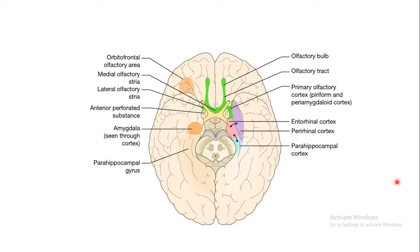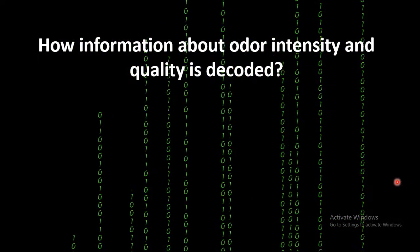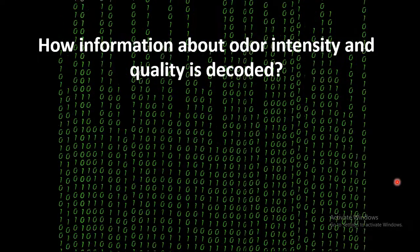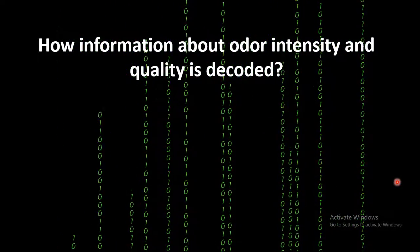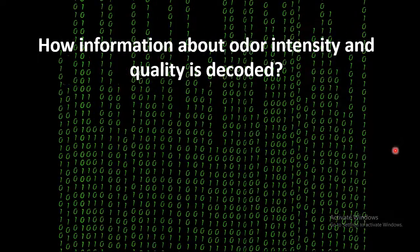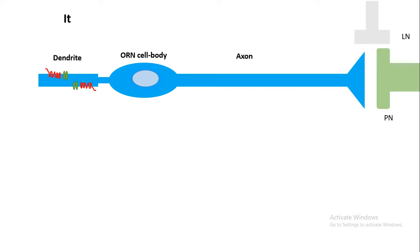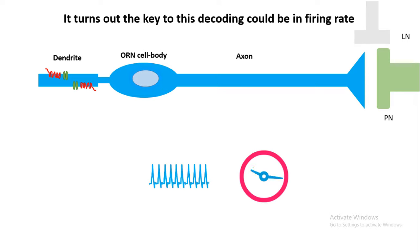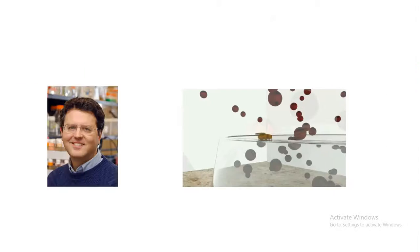An interesting question is how information about odor intensity and quality is decoded in real life. It turns out the answer lies in the firing rate of these olfactory receptor neurons. The firing rate and the firing pattern in time are very important, and those features are decoded by our brain to gain information about intensity and quality, and also to assign a valence to an odor — whether it is attractive, aversive, or irritating.